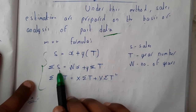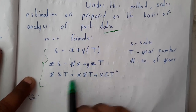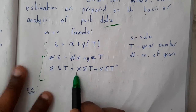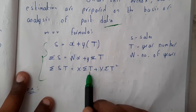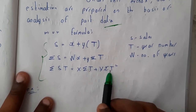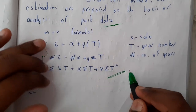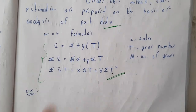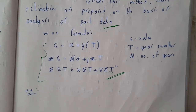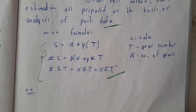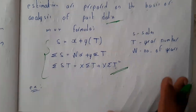The two equations are: Σ S = nx + y·ΣT, and Σ T = x·ΣT + y·ΣT². We have already discussed these topics in mathematics and statistics. Once we go through the problem, you'll compulsorily get an idea.